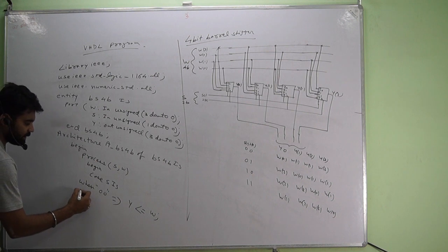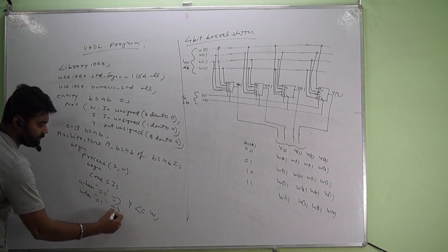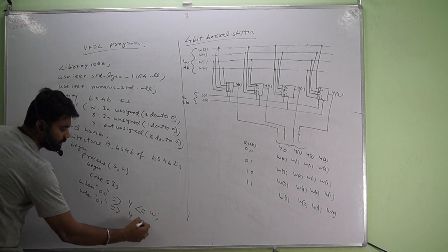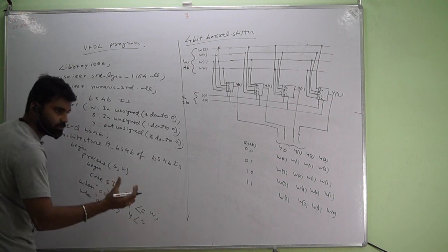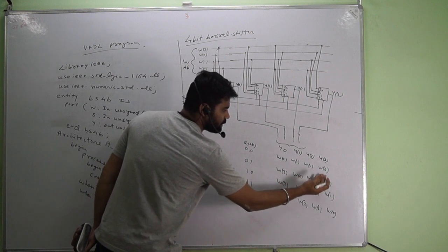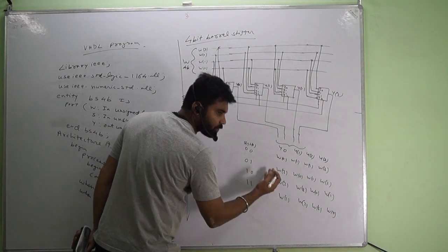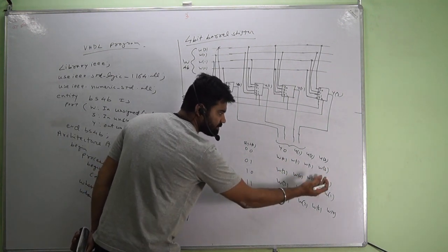In the second case, when 0 1, then copy w, not the direct value of w. Actually w3 has to be rotated from the lsb to the msb. So w r o r 1, that is rotate right once.